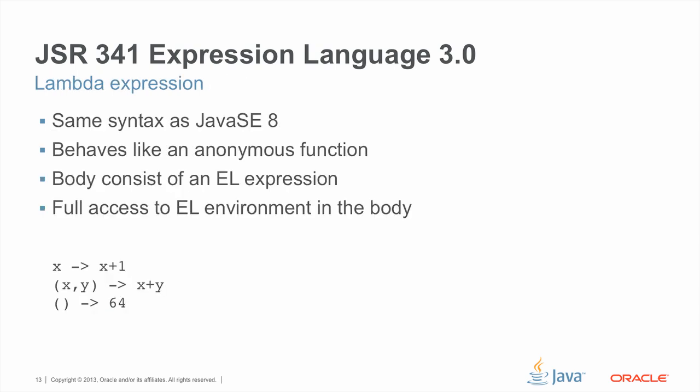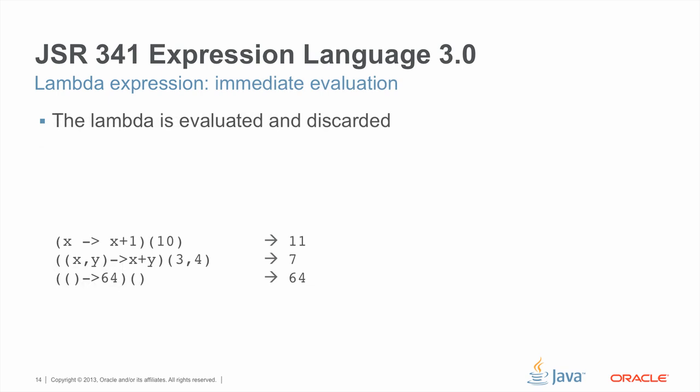New to EL 3.0, we introduce lambda expressions. The syntax we use for lambda expressions is the same as the one used in Java SE 8. A lambda expression behaves in EL like an anonymous function. The body of a lambda expression is just an EL expression. The example shows three lambda expressions: the first with a single parameter, the second with two parameters, and the last with no parameter. A lambda expression could be evaluated immediately by supplying the parameters at evaluation time, and those parameters would be applied to the lambda expression.